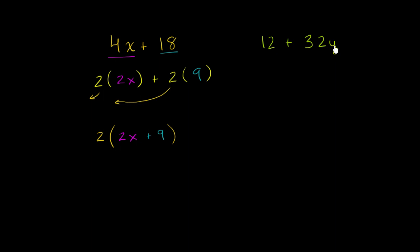And y is only divisible into the second term, not into this first term right over here. So it looks like 4 is the greatest common factor. So we could rewrite each of these as a product of 4 and something else.